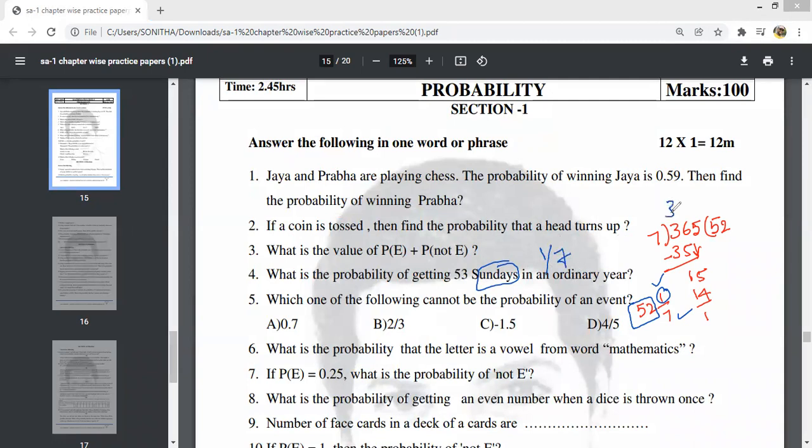So 1 day, the probability that Sunday occurs is 1 by 7. For a leap year with 366 days, the answer is 2 by 7. But for ordinary year it is 1 by 7. Don't get confused.